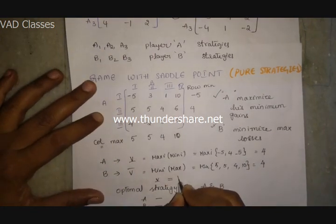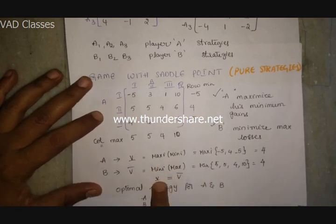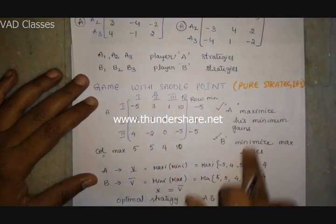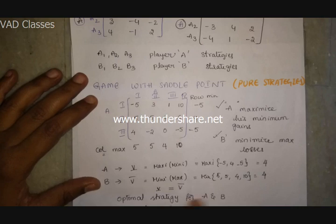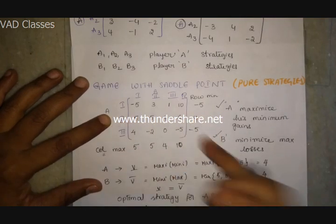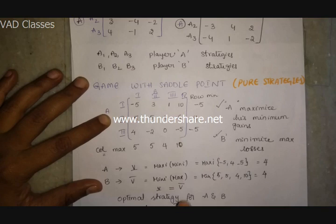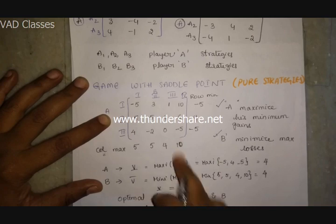For player A, the value is the maximum of the row minimums. The row minimums are minus five, four, minus five — so the maximum is four, which is the lower value. For player B, the value is the minimum of the column maximums: five, five, four, ten — the minimum is four, which is the upper value. Since lower value equals upper value, the game has a saddle point — a pure strategy.